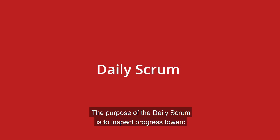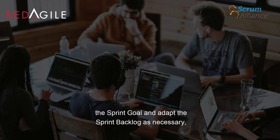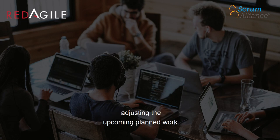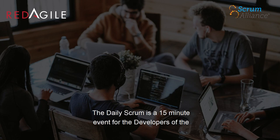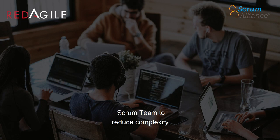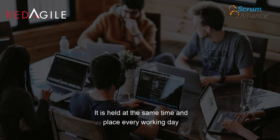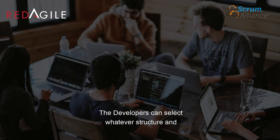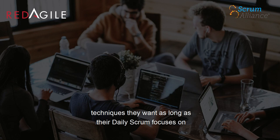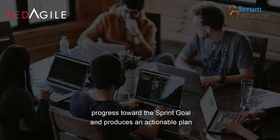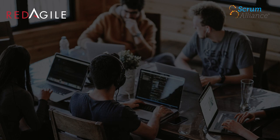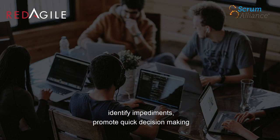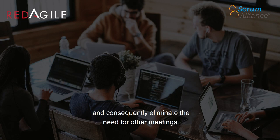Daily Scrum. The purpose of the Daily Scrum is to inspect progress toward the Sprint goal and adapt the Sprint backlog as necessary, adjusting the upcoming planned work. The Daily Scrum is a 15-minute event for the developers of the Scrum team. To reduce complexity, it is held at the same time and place every working day of the Sprint. If the Product Owner or Scrum Master are actively working on items in the Sprint backlog, they participate as developers. The developers can select whatever structure and techniques they want, as long as their Daily Scrum focuses on progress toward the Sprint goal and produces an actionable plan for the next day of work. Daily Scrums improve communications, identify impediments, promote quick decision making and consequently eliminate the need for other meetings.